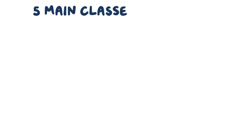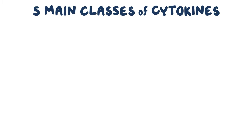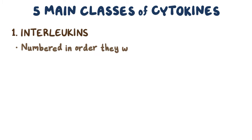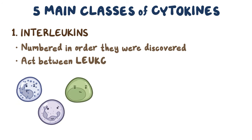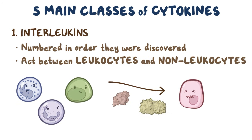Overall, there are five main classes of cytokines. The first and most varied group are the interleukins, which are numbered in the order they were identified, so the numbers actually don't tell us anything about what they do. It used to be thought that interleukins were only sent between leukocytes or white blood cells, but it turns out that they are released and act on both leukocytes as well as non-leukocytes.